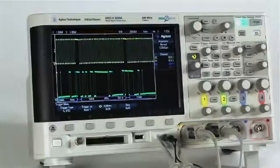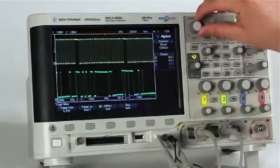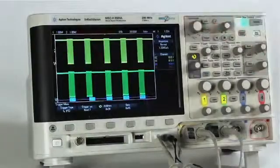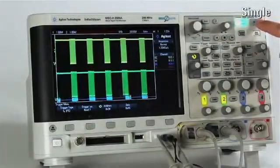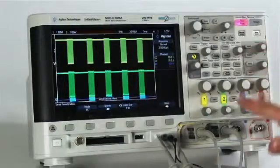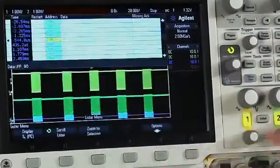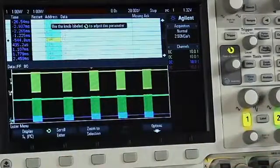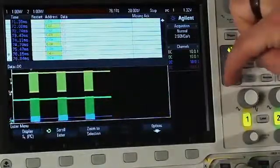Let's now capture a long stream of data and then search through the decoded record using our Lister feature. Zoom the scope's time base out, but not too much, we want to prevent undersampling. Press Single to stop repetitive acquisitions. Press Serial and then press Lister. Press Scroll Lister and we can use the entry knob to scroll through the decoded data on the Lister table.